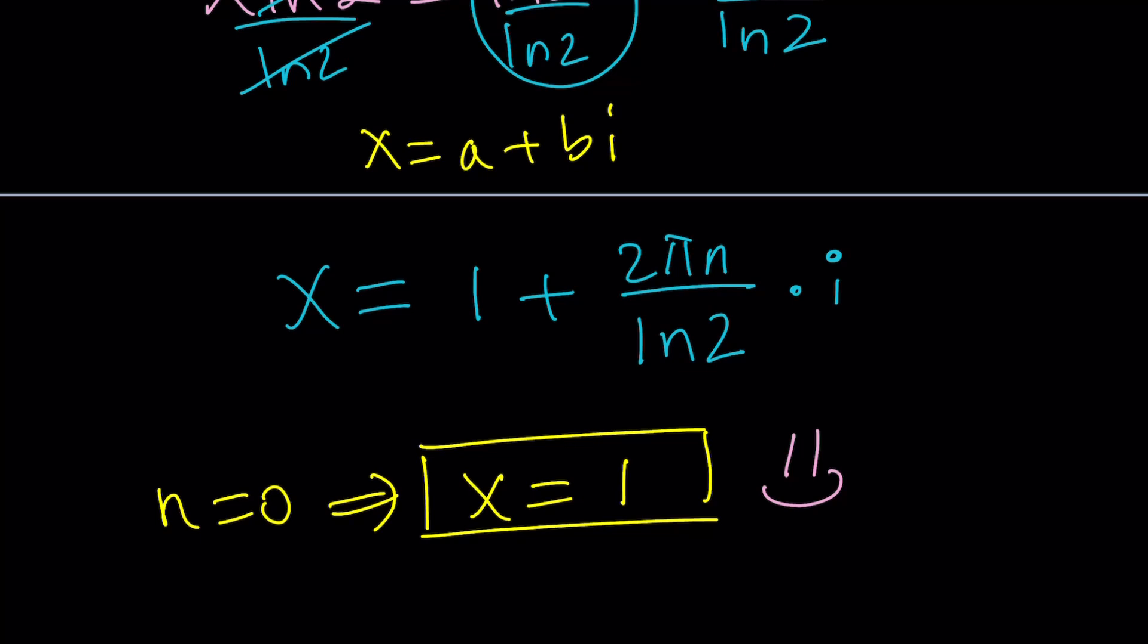2 to the x equals 2 and x equals 1. So the real solution is actually part of the complex solution family because there are infinitely many complex solutions, as you can see here, and can be replaced with any integer, and you're going to get a solution every time.